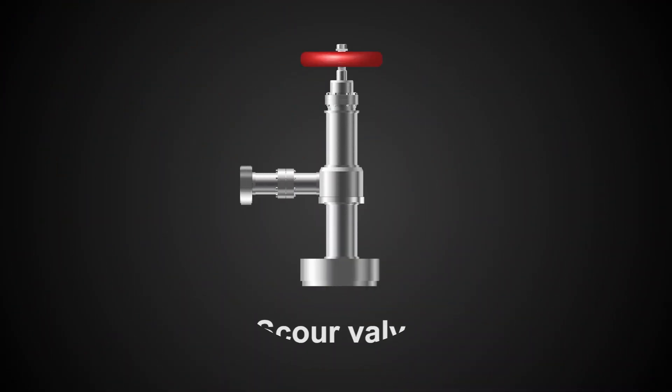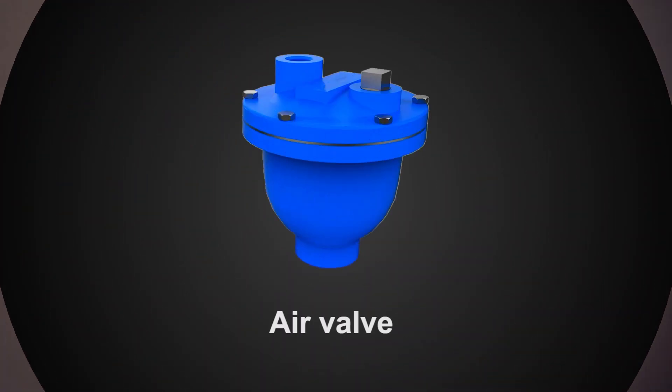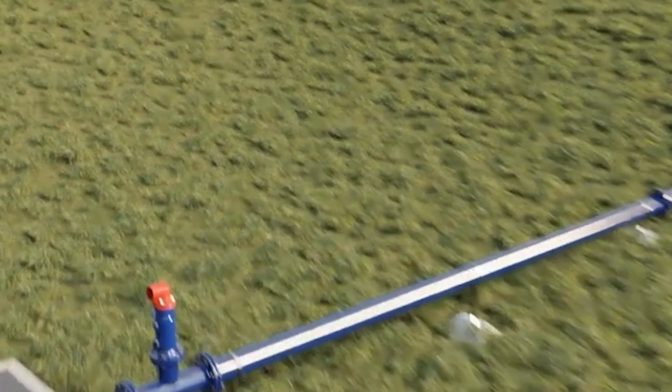Second one: scour valve. This valve is provided at the lower level in a pipeline so that each section can be isolated and drained for maintenance purposes. The water is distributed into a natural drain.